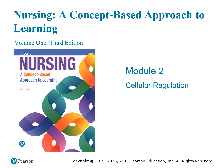Hello everyone, this is Dr. Locklear, and I'm coming to you today with module number two. Our concept is cellular regulation. We're going to begin this exemplar with anemia, which is 2.B, and that starts on page 69 in your volume 1 textbook.